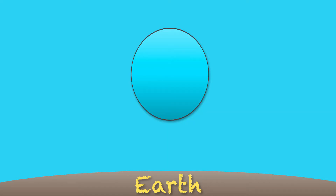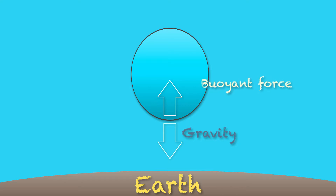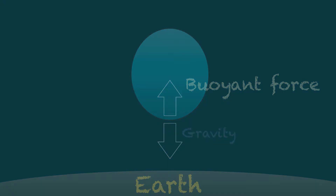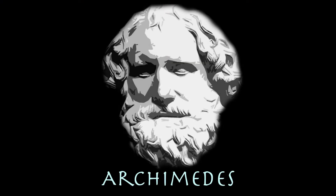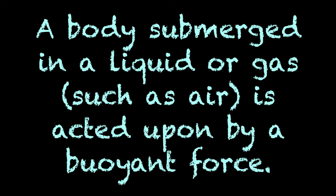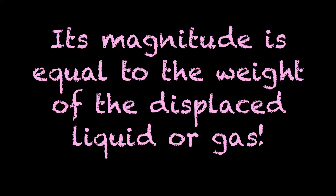This doesn't happen in air because, in accordance with Newton's laws, in addition to gravity, there is an opposite force acting on the balloon from the air, called a buoyant force. The great Archimedes formulated the buoyant force as follows: a body submerged in a liquid or gas, such as air, is acted upon by a buoyant force, and its magnitude is equal to the weight of the displaced liquid or gas.